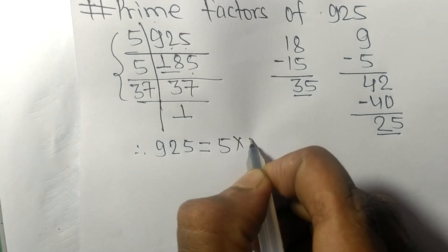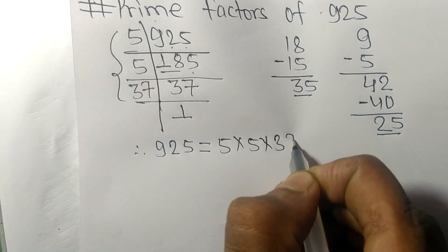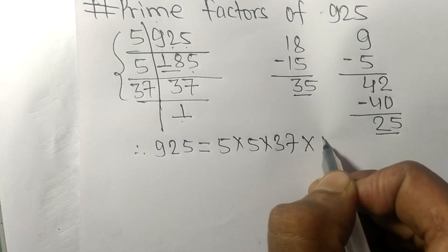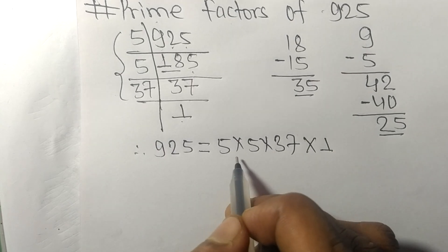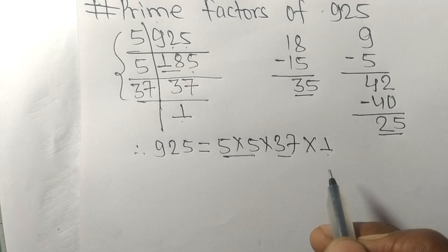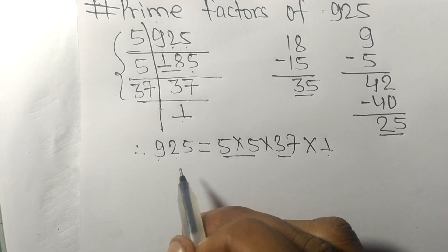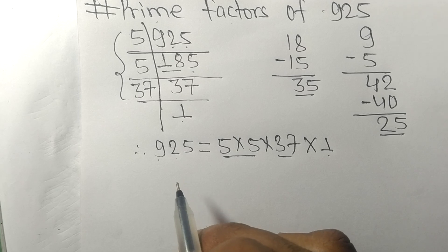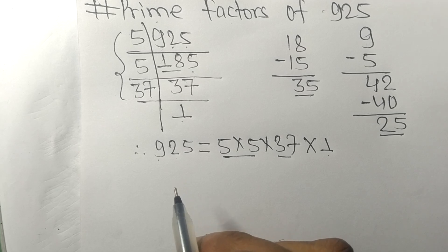5 times 5 times 37. So 5, 37, and 1 are the prime factors of 925. That's all for today. Thanks for watching.